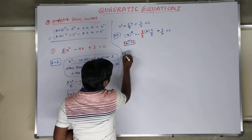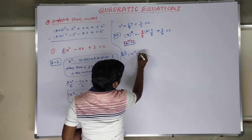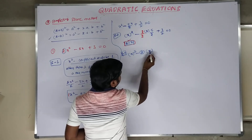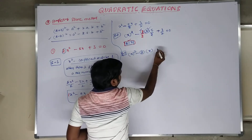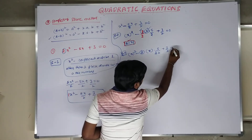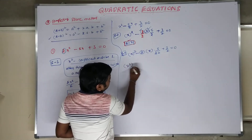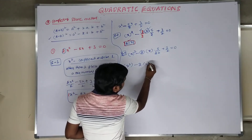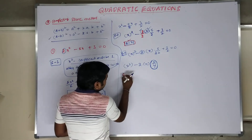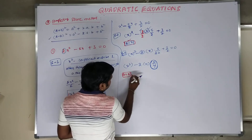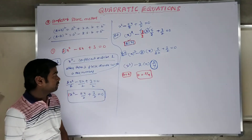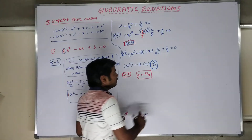Step 3: We have x squared minus 2 into A into B, where A is x and B is 5/4. So we write: x squared minus 2·x·(5/4) plus 3/2. Now A equals x is fixed, B equals 5/4 is fixed. We have A squared and 2AB, but next B squared is required. However, 3/2 is not B squared.